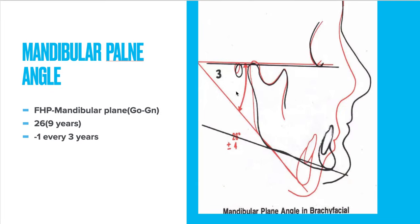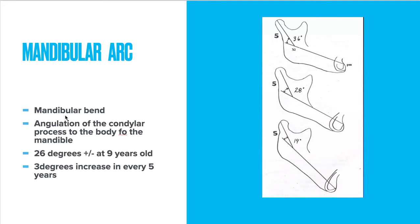The mandibular plane angle is the angle between the FH plane and the gonion-gnathion plane. It is about 26 degrees and decreases one degree every three years. The mandibular arc shows mandibular form — it is the angulation of the condylar process to the body of the mandible. At nine years old it increases three degrees every five years.